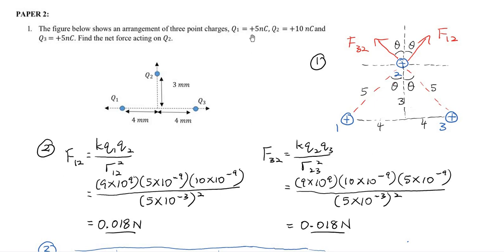First of all, we must notice what are the charges — what are the signs of the charges. We notice all of these are positive charges. Q1 is a positive charge, Q2 is a positive charge, and Q3 is a positive charge. This is very important.